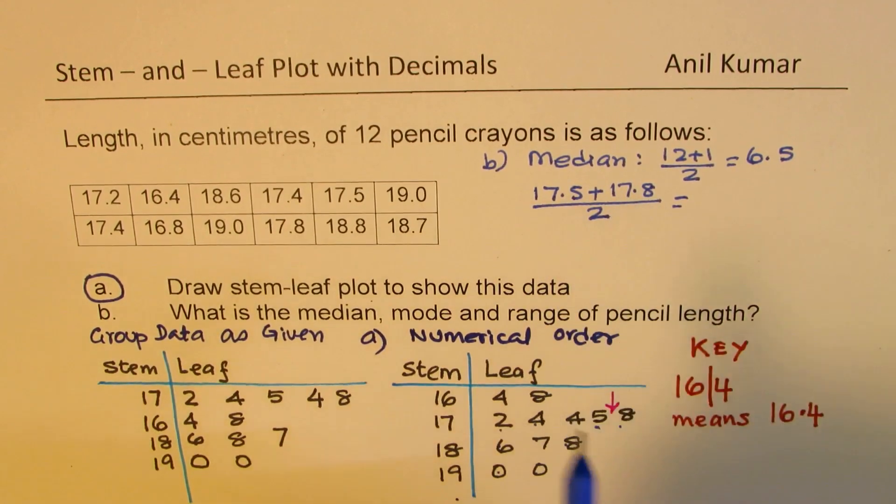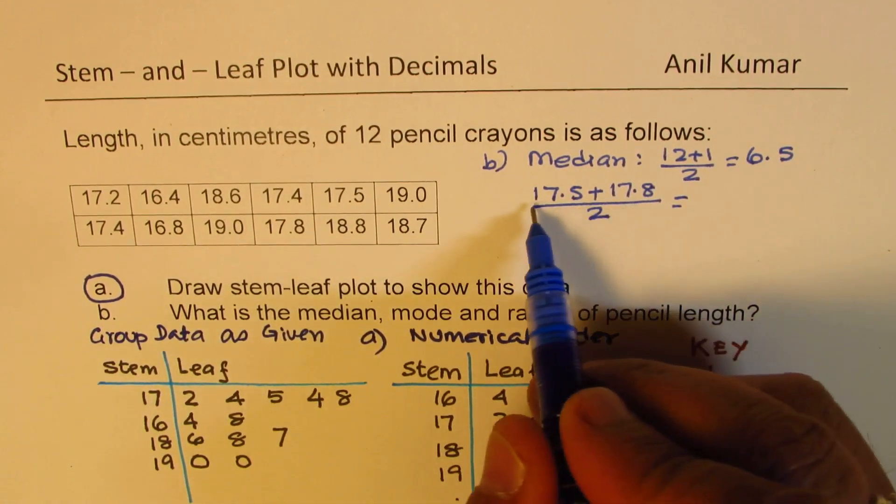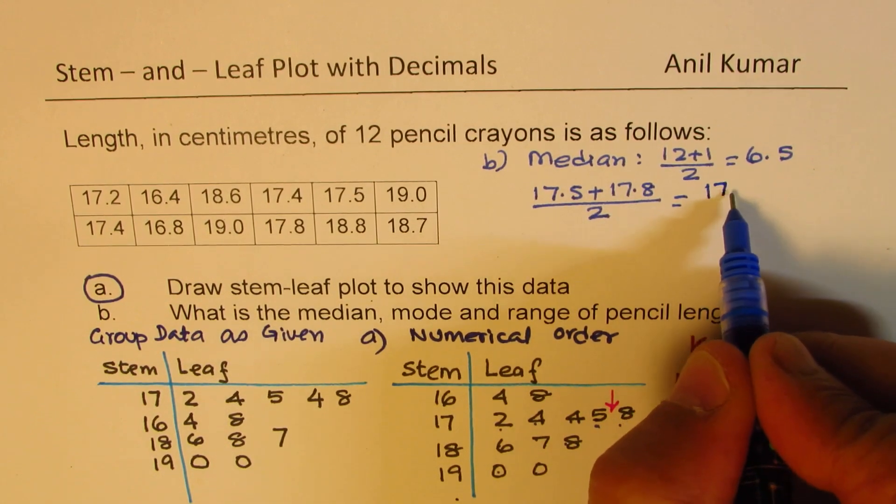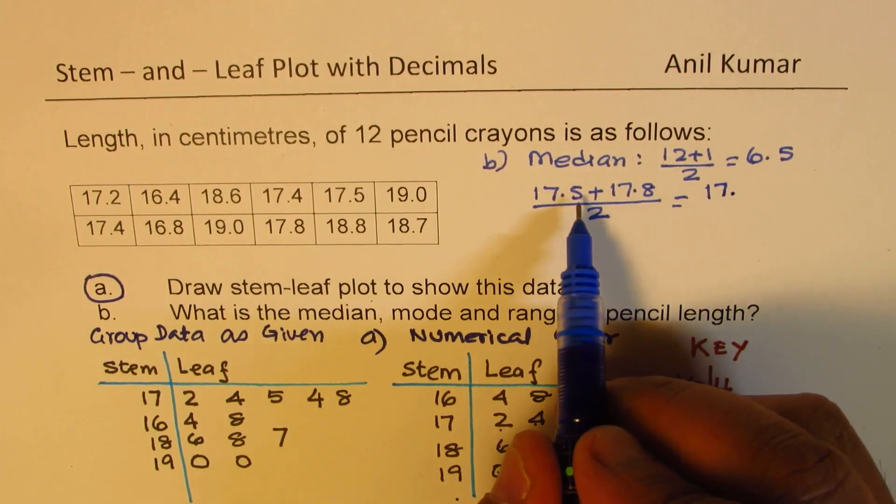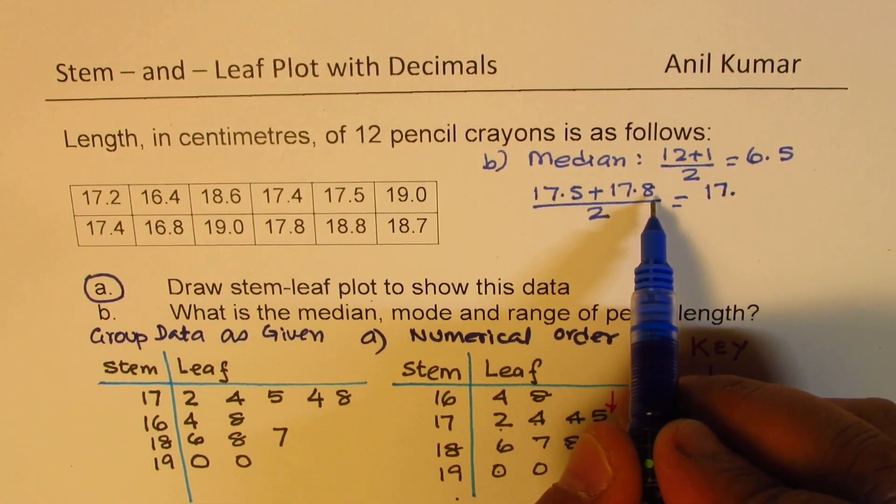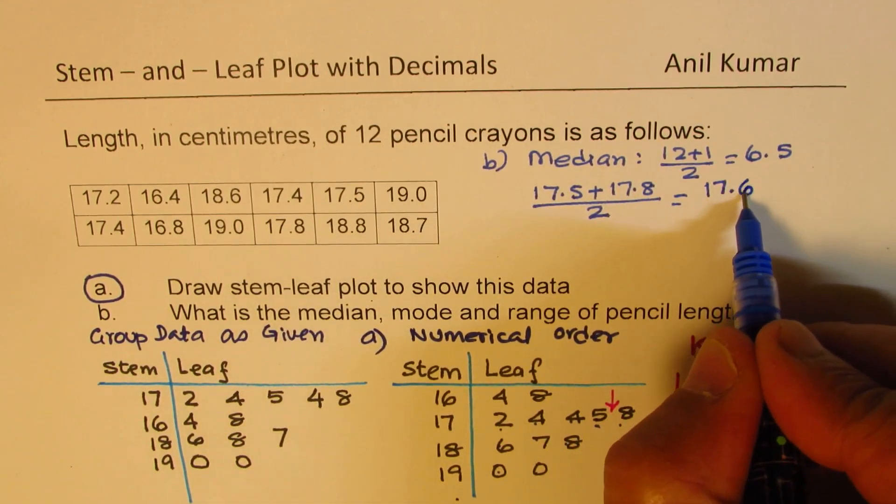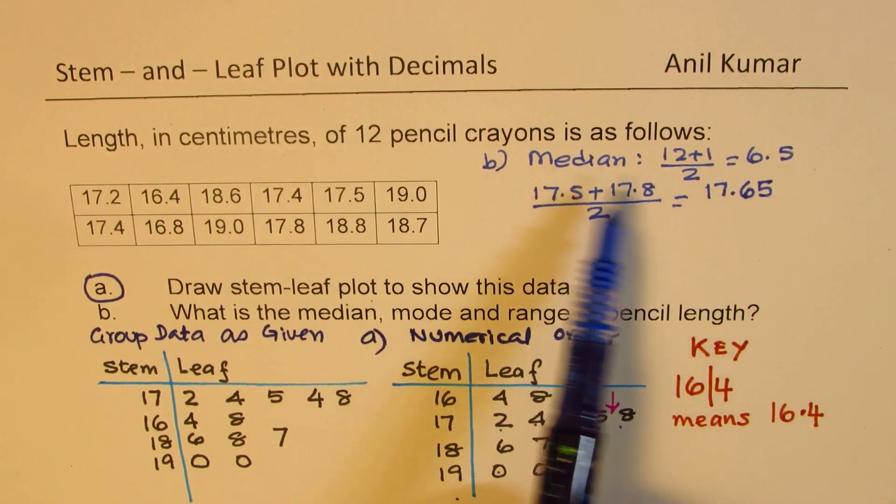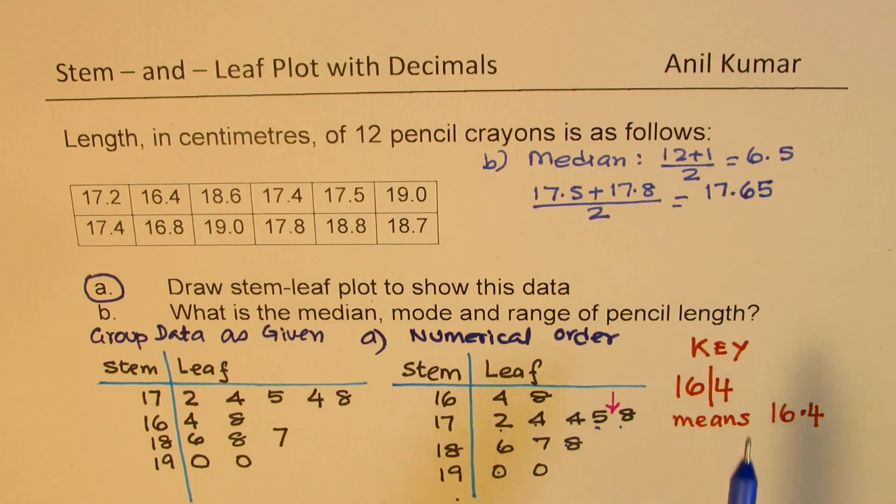Now in this case when you do it, 17 plus 17 divided by 2 will definitely give us 17, so we do get 17 here. But in the decimal place, 5 plus 8 is 13. So 13 divided by 2 will be 6.5. So here we get 6.5. That means 17.65. That becomes your median for this particular case.